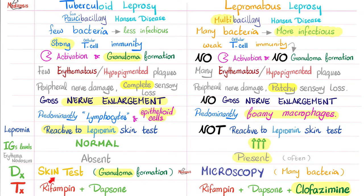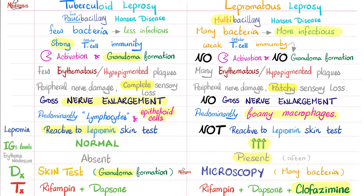Let's talk about treatment. For tuberculoid leprosy, use rifampin and dapsone together. For lepromatous leprosy, use rifampin and dapsone, plus another medication: clofazimine. The treatment of tuberculoid leprosy is usually for 6 months, but for the more severe lepromatous leprosy, it is 12 months.